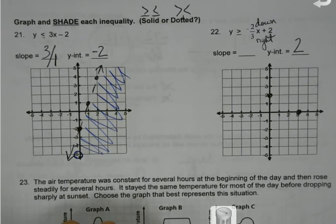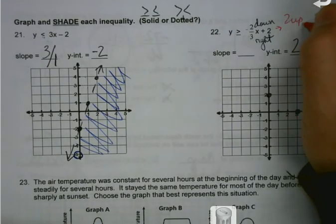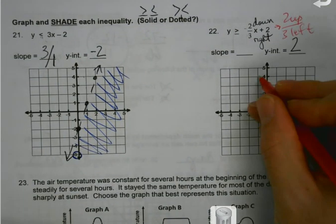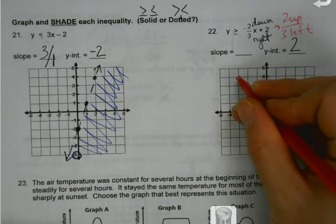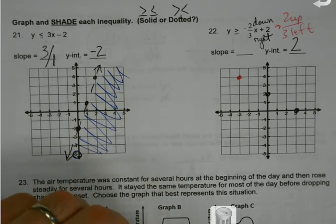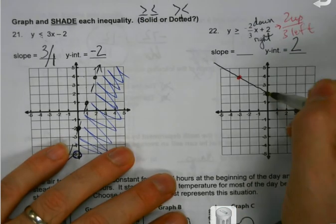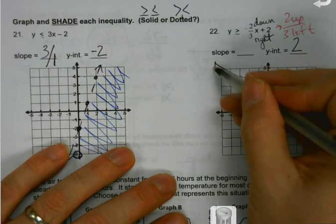What if I wanted to put another dot but ran out of room? I have another option — I could go 2 up and 3 left if I really wanted an extra dot. That's good to know just in case. So what type of line is going through our 3 dots? Solid. Solid line.